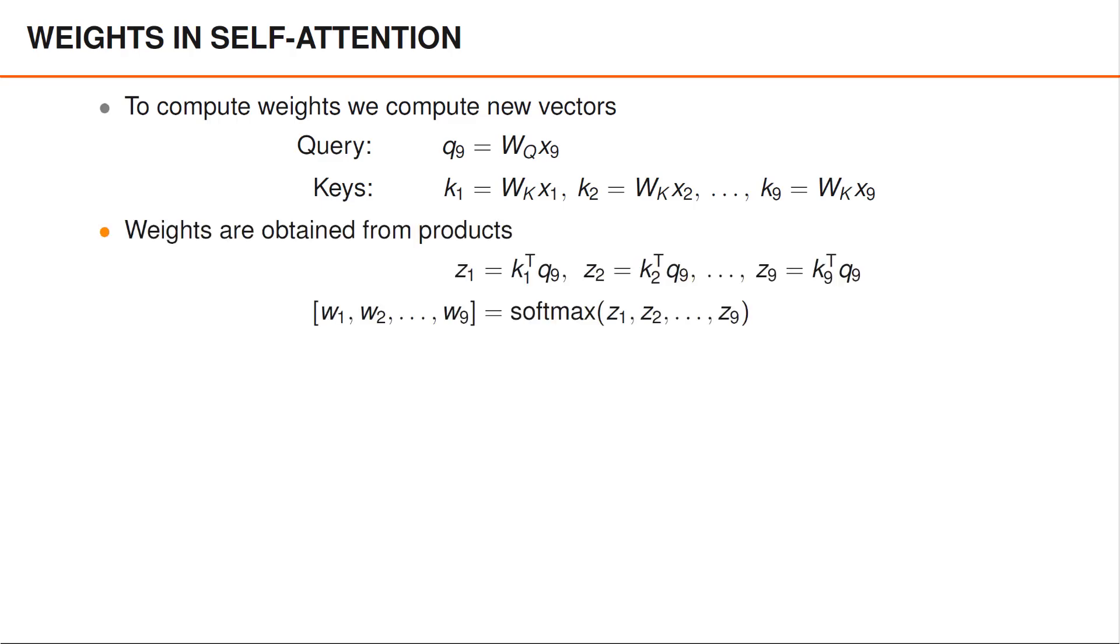We then take the inner product between the query vector Q9 and the key vector K1 to obtain Z1, the inner product between Q9 and K2 to obtain Z2, and so on.